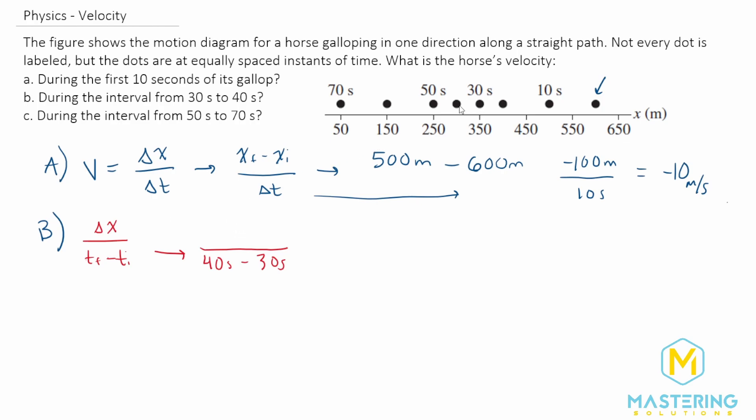The x final where the horse ends up at 40 seconds is at 300 meters. So we have 300 meters minus where it started out at 30 seconds, or 350 meters.